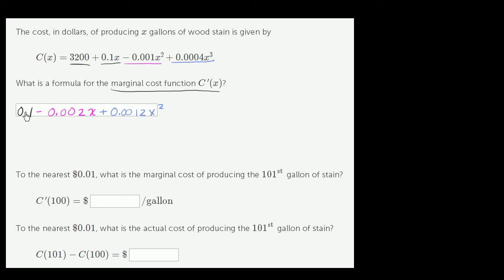So c prime of x = 0.1 − 0.002x + 0.0012x². To the nearest penny, what is the marginal cost of producing the hundred-first gallon of stain? They want us to approximate what the incremental cost of the next gallon is going to be using the marginal cost function.